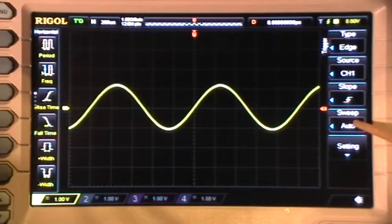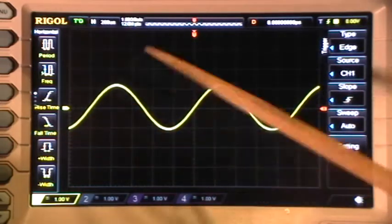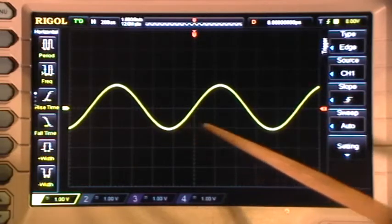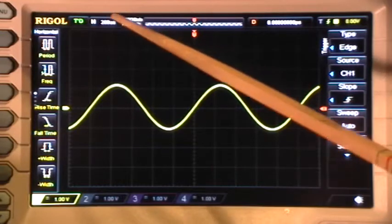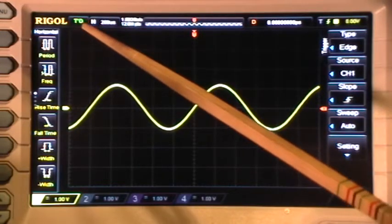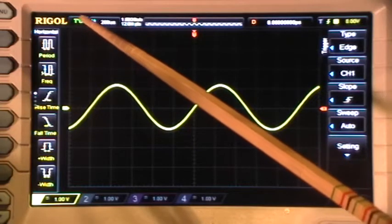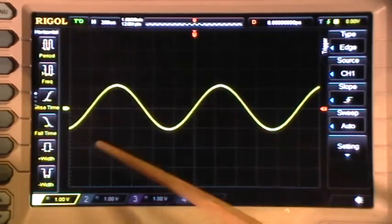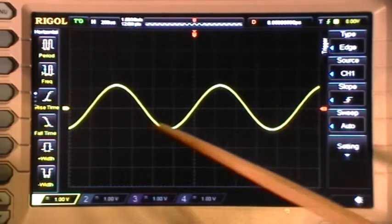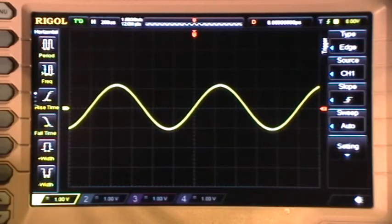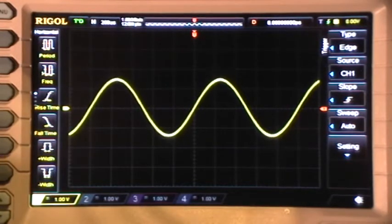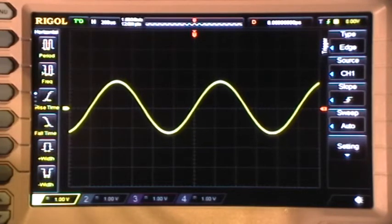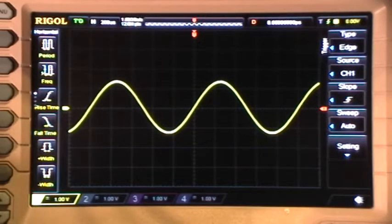So when the sweep mode is auto, the scope continues to update the screen regardless of whether it actually senses a trigger event. And if you look up here in this corner, you can see the green T apostrophe D which indicates triggered. The scope is now triggered and it's triggering on the sine wave. So now if I go to the little function generator and I vary the amplitude, you can see how the amplitude changes. So we're obviously seeing a live trace there.